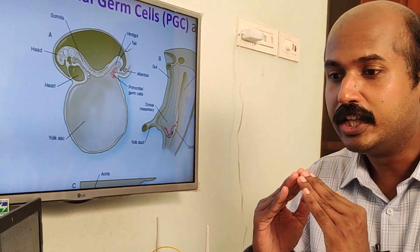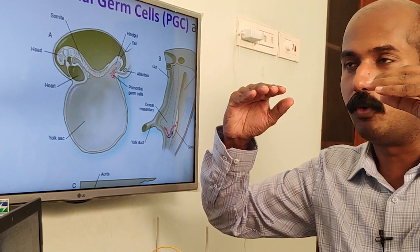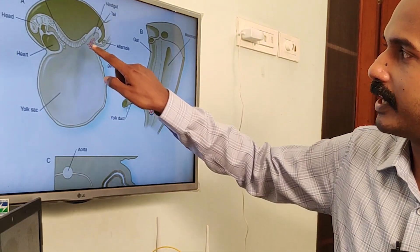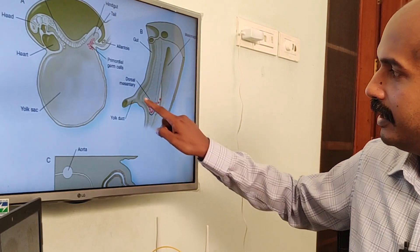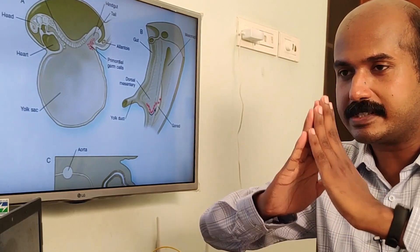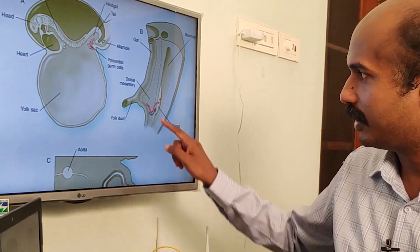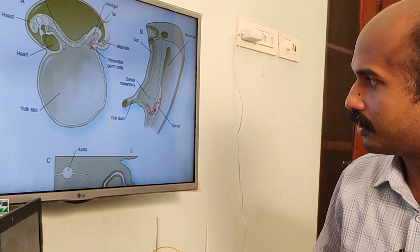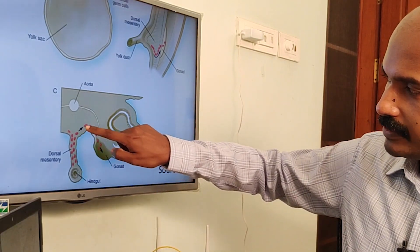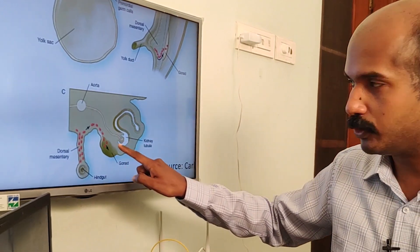The PGCs migrate through the dorsal mesentery into the posterior embryonic wall. This is the yolk duct through which the yolk sac communicates into the gut. Through the dorsal mesentery, they migrate backwards to reach the gonads, as shown in this horizontal section image.